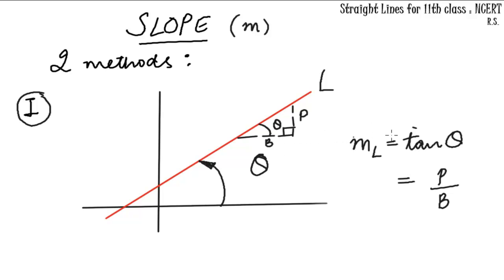What is the slope of such a line? ml here is the slope of line l, which is equal to tangent of theta, which is equal to perpendicular upon base.